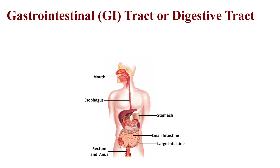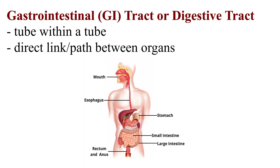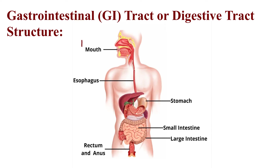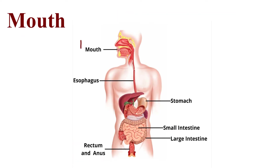The Gastrointestinal (GI) tract, or Digestive Tract, is described as a tube within a tube — it is directly put between organs. Its structures include the Mouth, Esophagus, Stomach, Small Intestine, Large Intestine, and the Rectum and Anus.